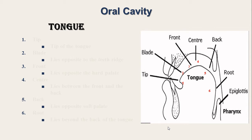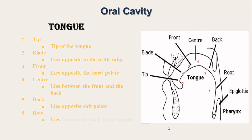Next, inside the oral cavity we have the tongue. This tongue is divided into six parts. The tip can be easily recognized. The blade of the tongue lies opposite the teeth ridge. The front lies opposite the hard palate. The back of the tongue lies opposite the soft palate. The center of the tongue lies between the front and the back. The root of the tongue lies beyond the back of the tongue. Therefore the tongue is divided into six parts namely tip, blade, front, center, back, and root. These are the positions occupied by the different parts of the tongue when the speech organs are at rest, that is when we are not speaking.